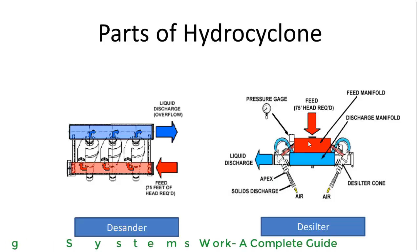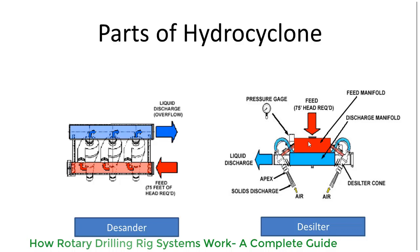Parts of hydrocyclone desilter and desander. A hydrocyclone may have various numbers of hydrocyclone cones.